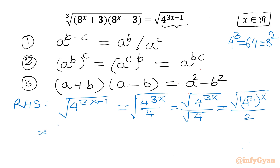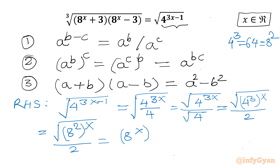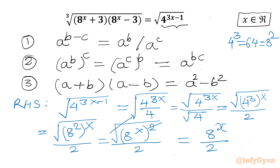We know that 4³ is 64, which can be written as 8². So let me write the numerator as (8²)^x, and the denominator is 2. Now I can swap the parts using property number 2, writing it as (8^x)² over root 2. The root and power 2 cancel, so our RHS is 8^x divided by 2.